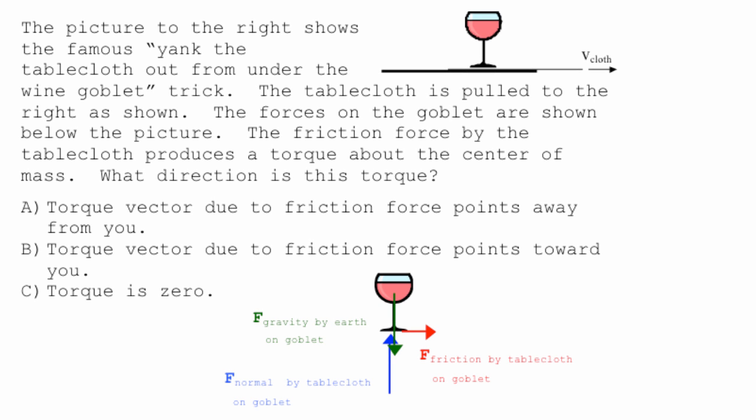So here is the famous—maybe not so famous—yank the tablecloth out from under the wine goblet trick. This wine goblet is meant to be sitting on this really thin line right here is a tablecloth. The thicker line is the table. So here's the table. There's the tablecloth right above it, sitting on top of it. The tablecloth is going to be yanked to the right. The wine goblet is sitting on the tablecloth.